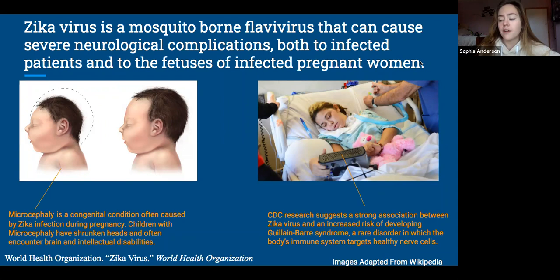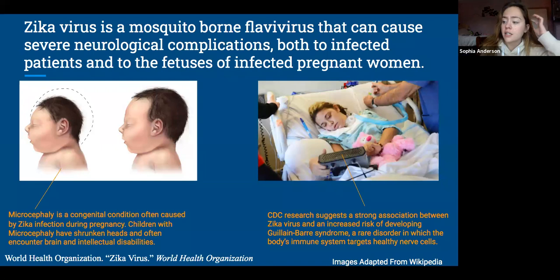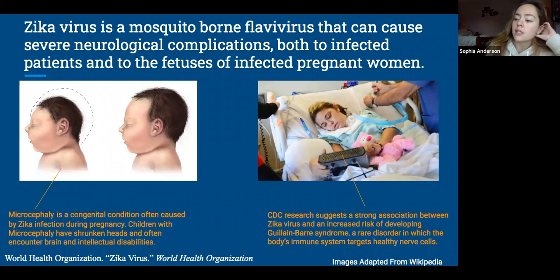Oftentimes, however, infected women don't even make it to full-term pregnancy, having miscarriages or preterm birth. The image to the left shows a sketch of a newborn suffering from microcephaly. Microcephaly is a congenital condition often caused by Zika infection during pregnancy. This is a severely debilitating disease — physically, intellectually, and emotionally — characterized by a shrunken head and below-average intelligence.